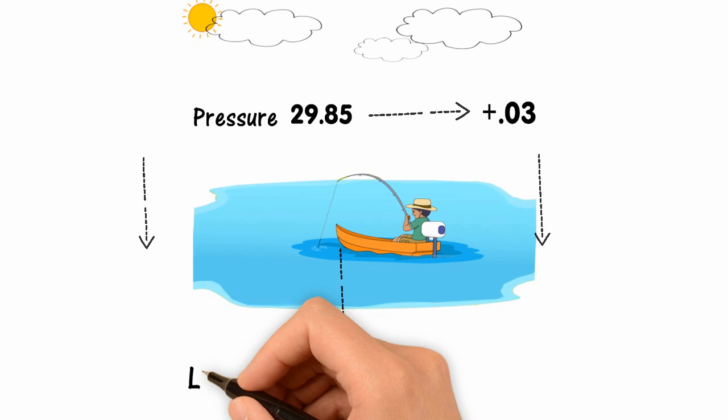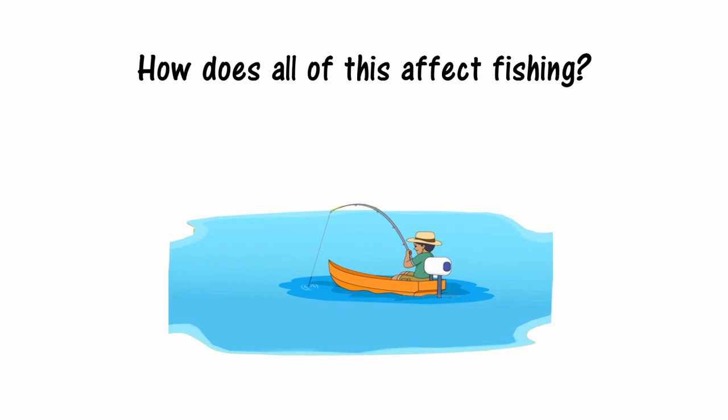How does all of this affect fishing? Fish feel the weight of the air pressing on the water and it affects the air in their organs, especially their swim bladder, which manages buoyancy.